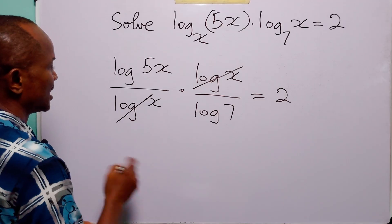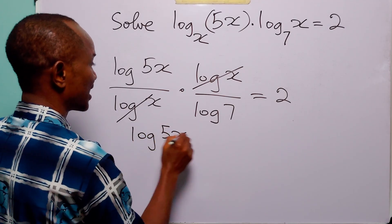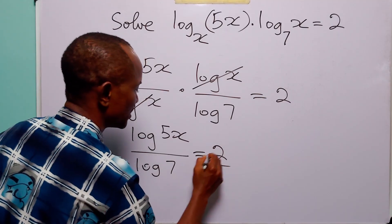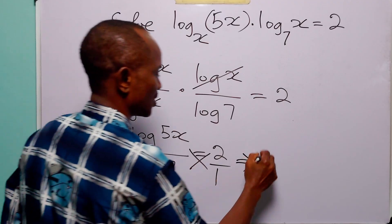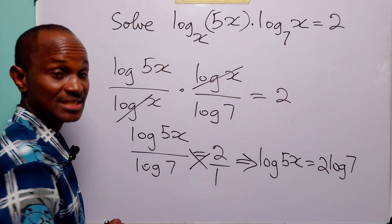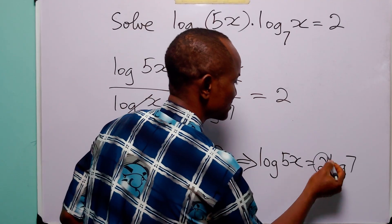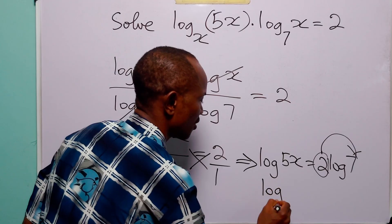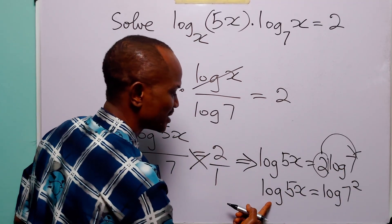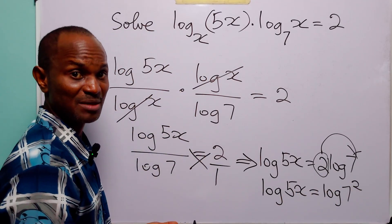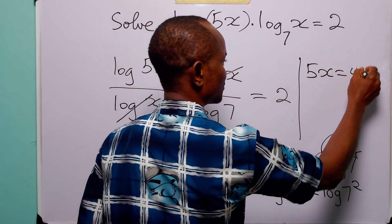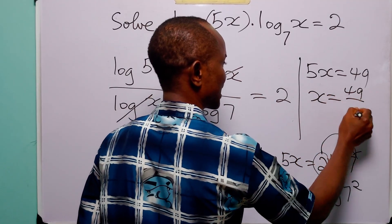The log base 10 of x terms cancel, leaving us with log base 10 of 5x over log base 10 of 7 equals 2. Cross multiplying, log base 10 of 5x equals 2 times log base 10 of 7. Applying the power rule, log base 10 of 5x equals log base 10 of 7 squared. So 5x equals 49, and therefore x equals 49 over 5.